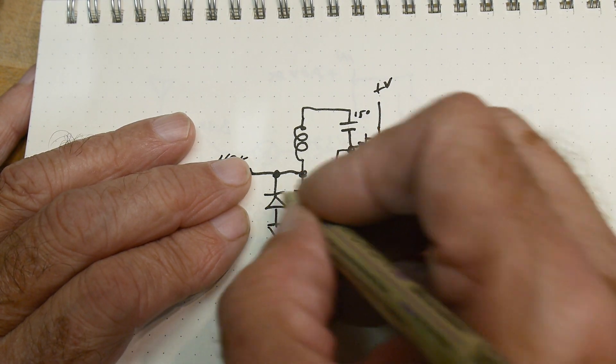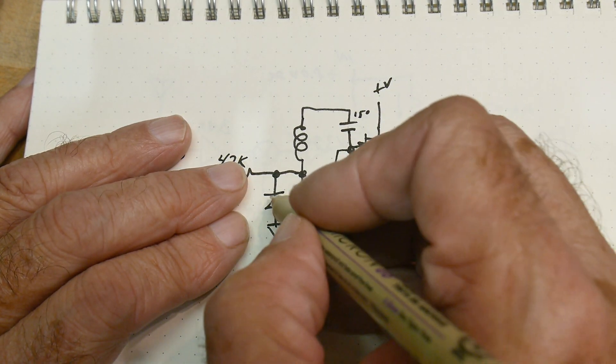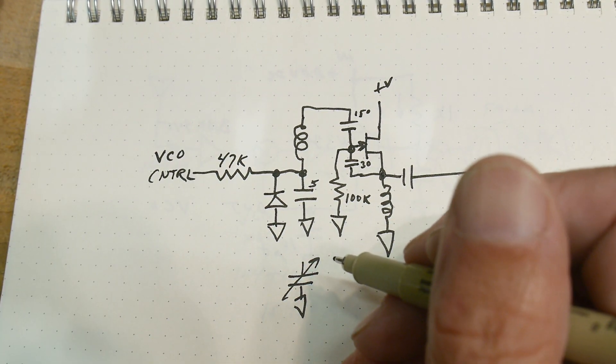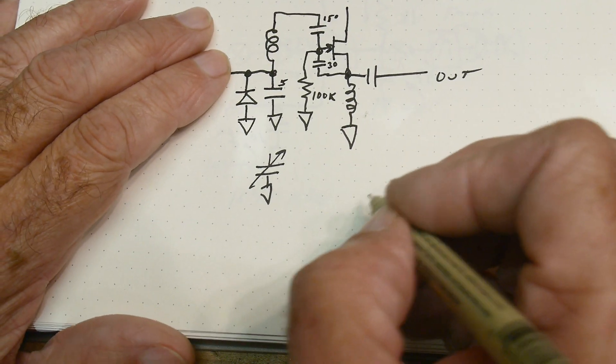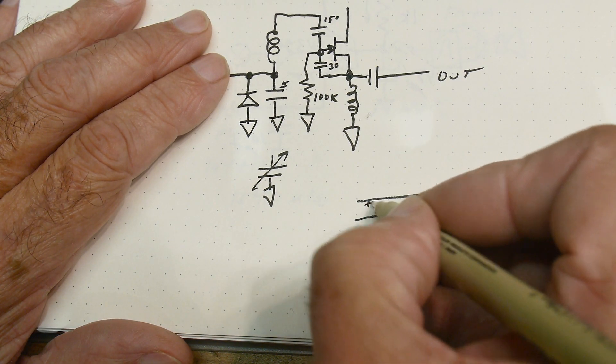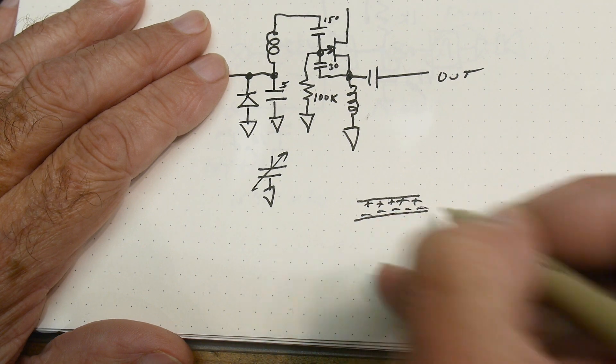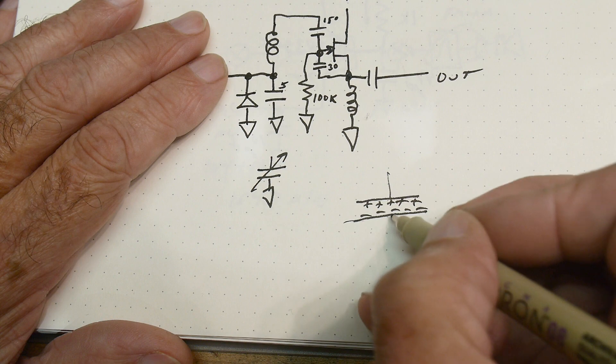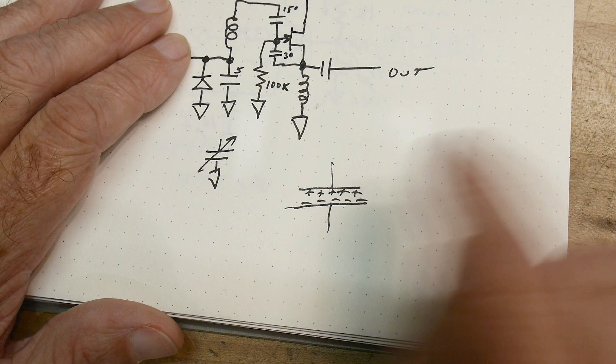So there are things called varactors. They are voltage variable capacitors. And they're generally drawn as a diode. And so if you think about a capacitor, well, what is a capacitor? Well, a capacitor is two plates of metal, and then little plus charges go to one side and little negative charges go to the other side. And they build up an electric potential across this. So that's like a simplified capacitor.